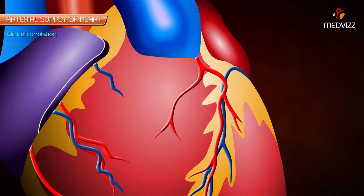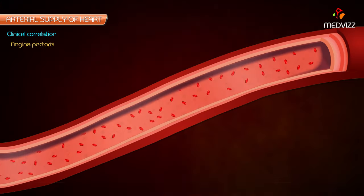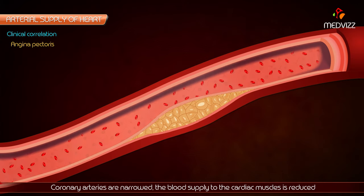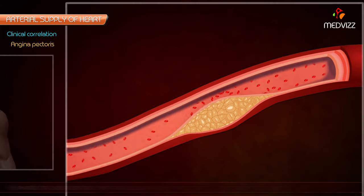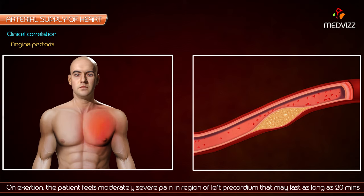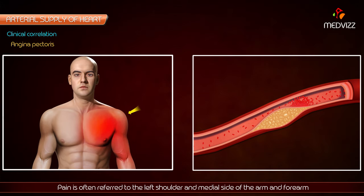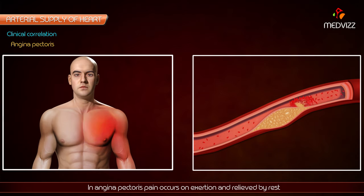Clinical correlation — angina pectoris: if the coronary arteries are narrowed, blood supply to the cardiac muscles is reduced. On exertion, the patient feels moderately severe pain in the region of the left precordium that may last as long as 20 minutes. The pain is often referred to the left shoulder and medial side of the arm and forearm. In angina pectoris, pain occurs on exertion and is relieved by rest, because the coronary arteries are so narrowed that ischemia of cardiac muscle occurs only on exertion.